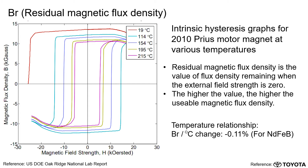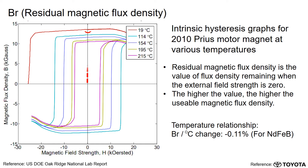So what exactly is Br? The left figure shows the intrinsic hysteresis graph for the 2010 Prius motor magnet across different temperatures. The Br marks the point where the y-axis intersects with the magnetic hysteresis curve. The residual magnetic flux density, Br, refers to the flux density that remains when the external field strength is reduced to zero. A higher Br value indicates a greater usable magnetic flux density.